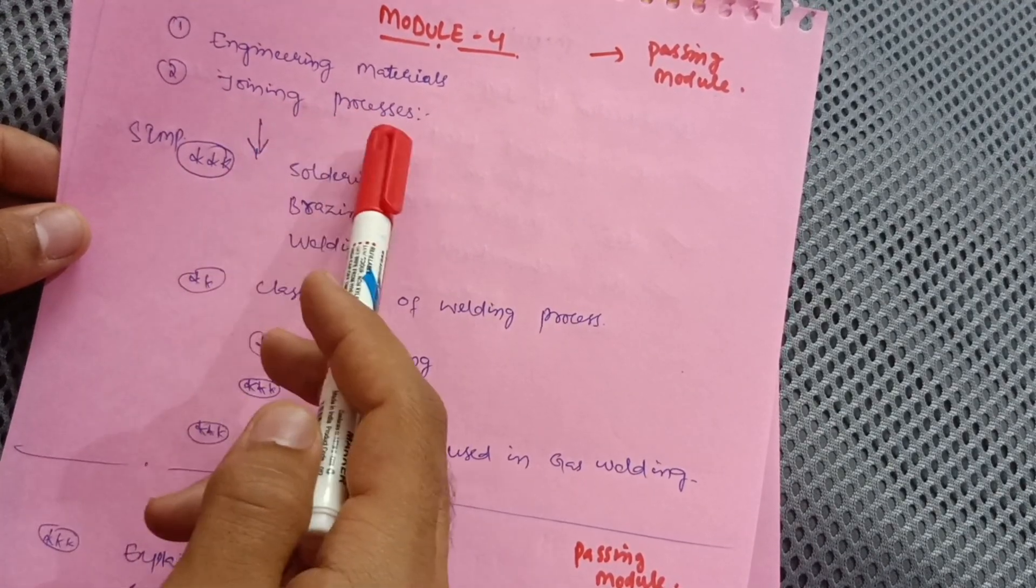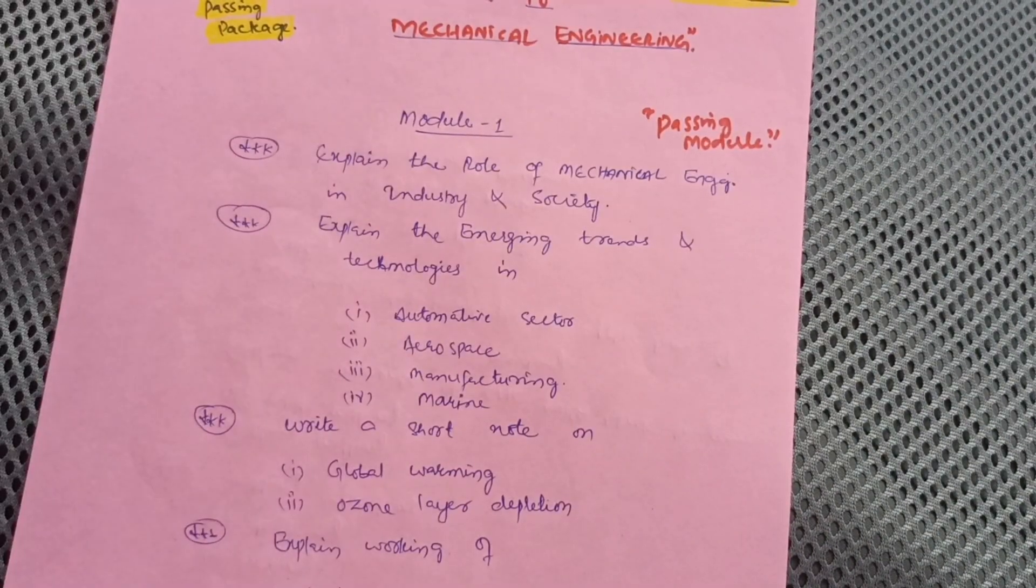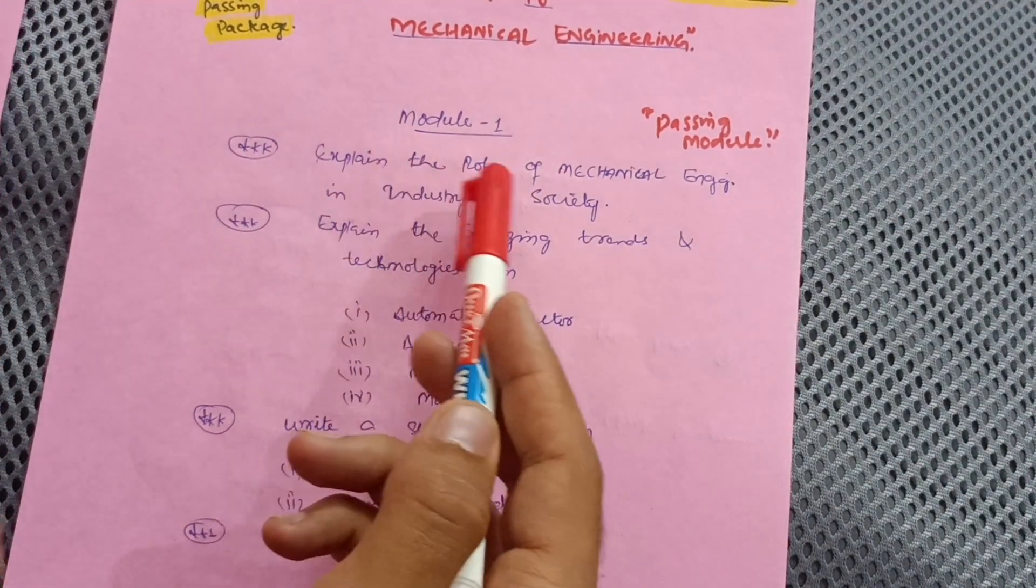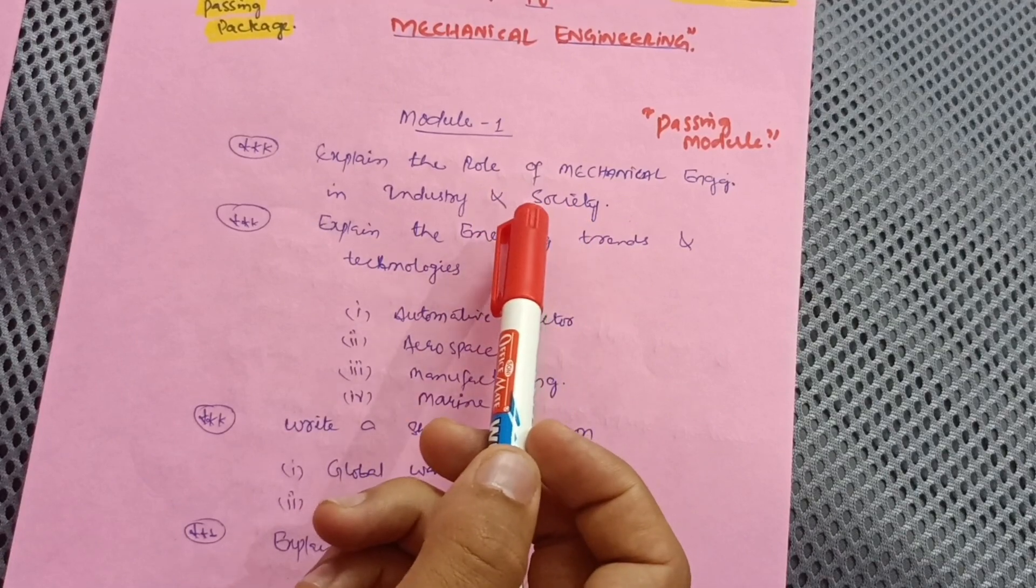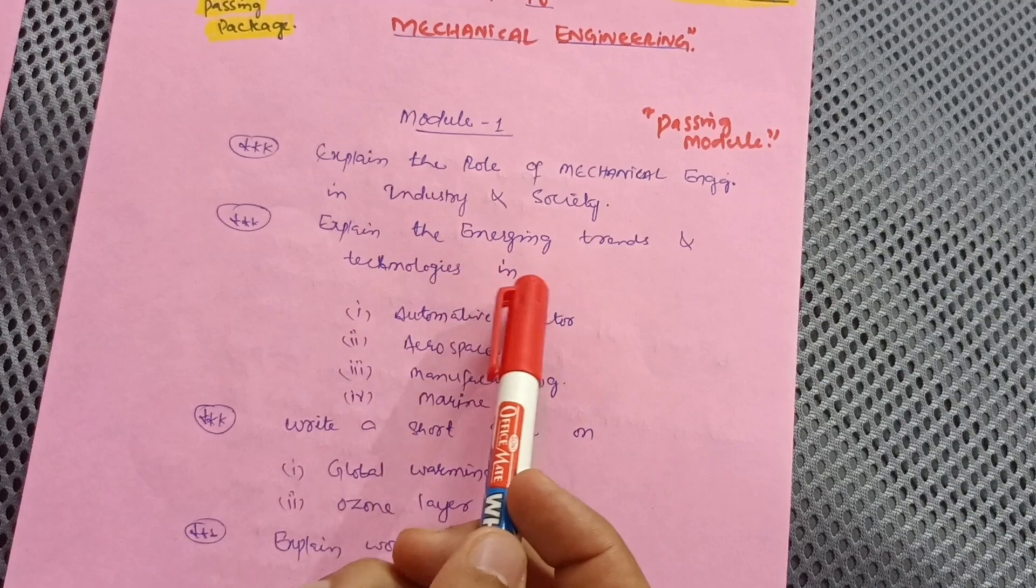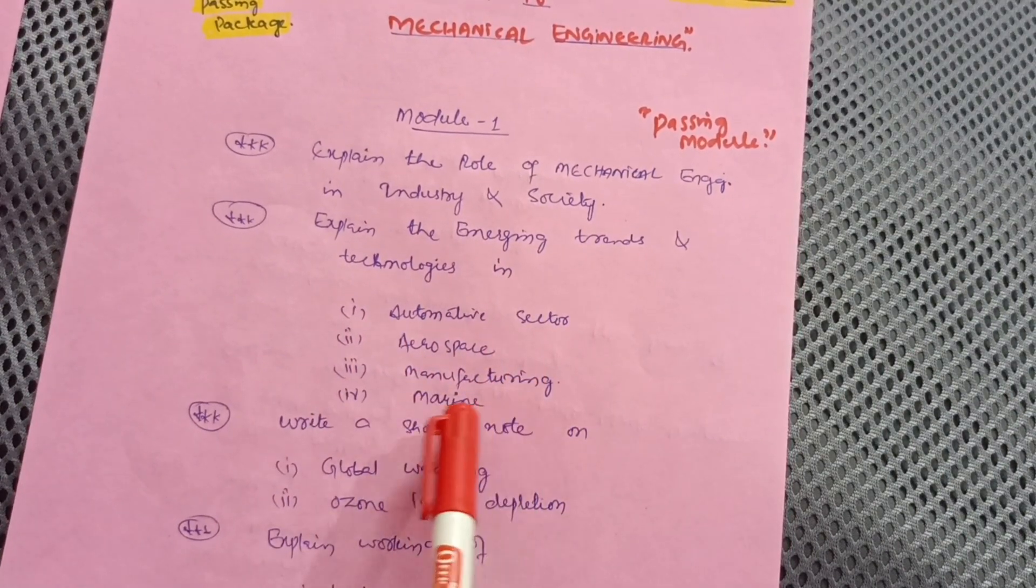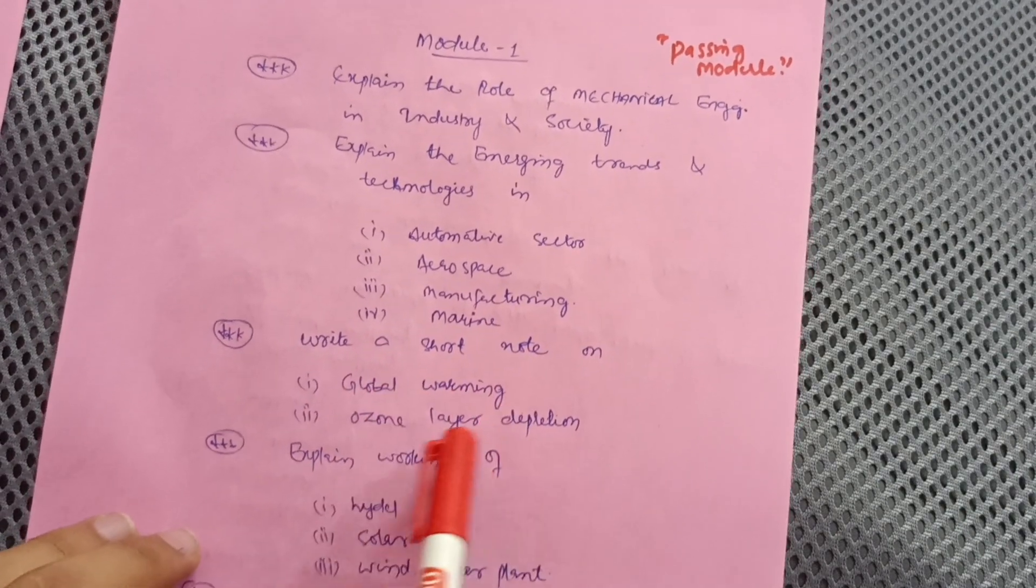Next, Module 1: explain the role of mechanical engineering in industry and society, which is a most important seven marks question. Explain the emerging trends and technologies in sectors like automotive, aerospace, manufacturing, and marine. Write a short note on global warming and ozone layer depletion.